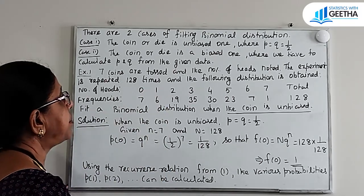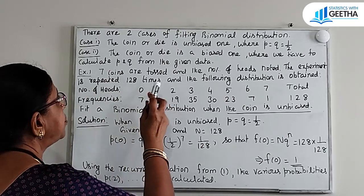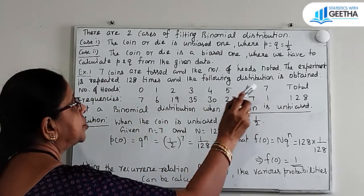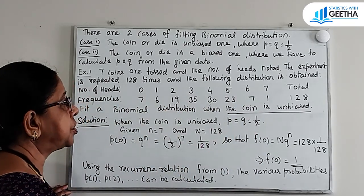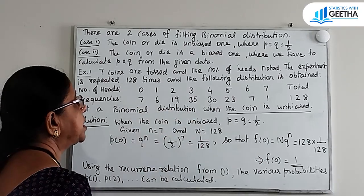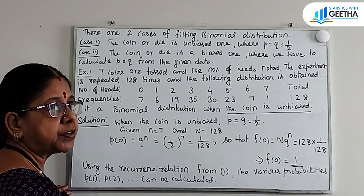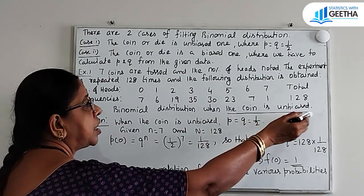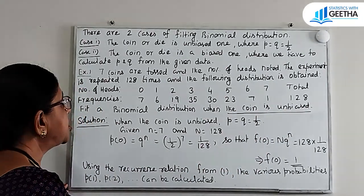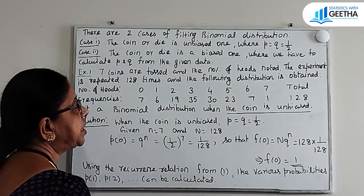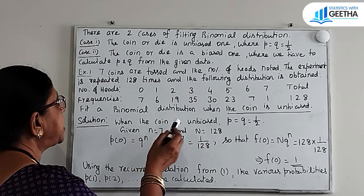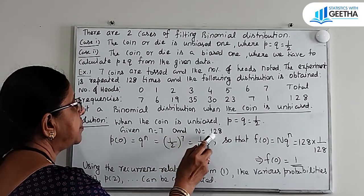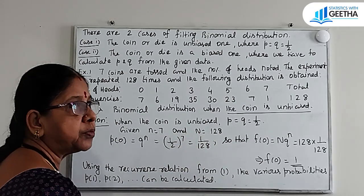Exercise number 1: Seven coins are tossed and the number of heads noted. The experiment is repeated 128 times and the following distribution is obtained. Number of heads: 0, 1, 2, 3, 4, 5, 6, 7. Frequencies: 1, 7, 6, 19, 35, 30, 23, 7, 1. Total frequency N = 128. Fit a binomial distribution when the coin is unbiased. Solution: When the coin is unbiased, p = q = 1/2. Given small n = 7 (seven coins tossed), and total frequency capital N = 128.